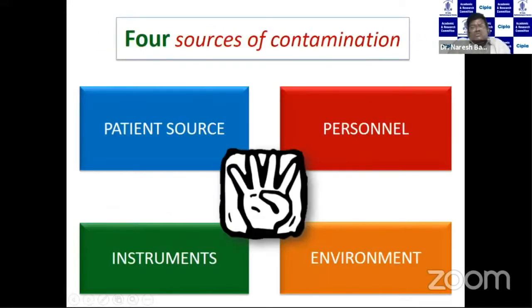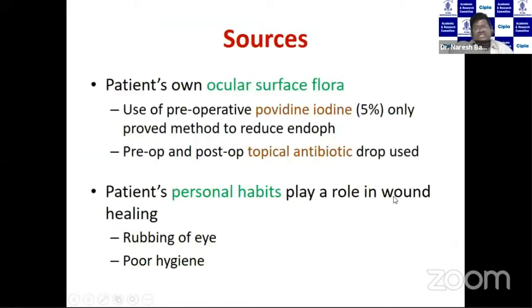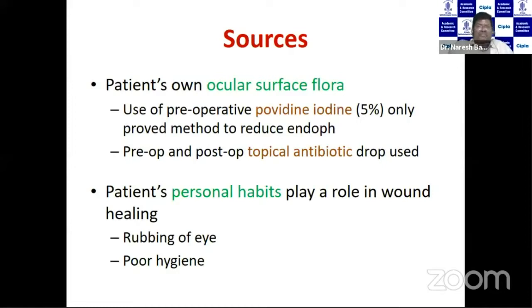In post-operative endophthalmitis, there are basically four sources: the patient themselves, persons handling the patient, surgical instruments, and the environment. To prevent endophthalmitis from the patient's own surface flora, the best preventive measure with level 1 evidence is povidone-iodine 5%. Pre- and post-operative antibiotics are also useful. Patient habits such as eye rubbing and poor hygiene should also be counseled post-operatively.